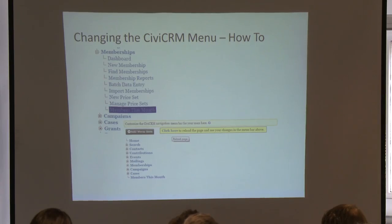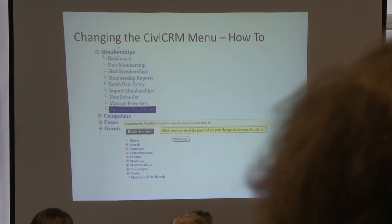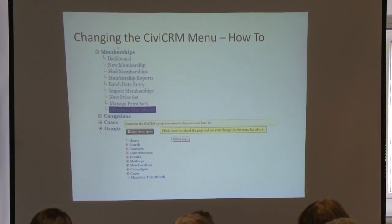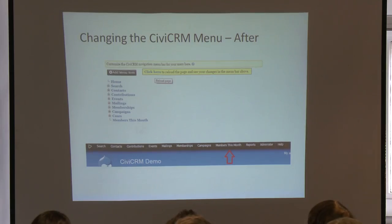With the menu tree structure, you decide exactly which place you want this new menu item. And you can drag and drop. So now we've included your 'Members This Month' report on the main menu of CiviCRM with just a few clicks — easy, two minutes. And for your users it's much more comfortable because they want to see that at a glance.